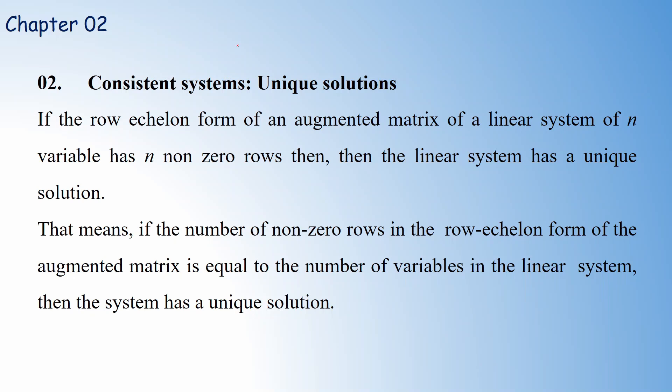For example, if you have 4 variables in the linear system, then the row echelon form of the augmented matrix should contain 4 non-zero rows. If the number of non-zero rows in the row echelon form equals the number of variables, then the system has a unique solution.